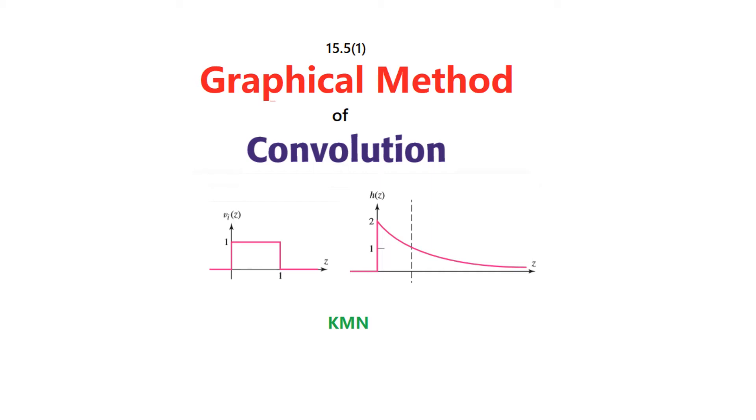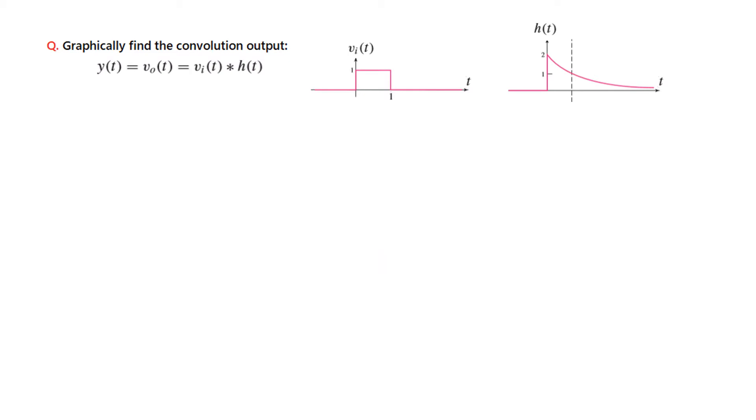In this video we will learn about Graphical Method of Convolution. So these are the two signals. This is the input signal v(t) and this is the impulse response h(t). And we have to find the convolution to find the output y(t).